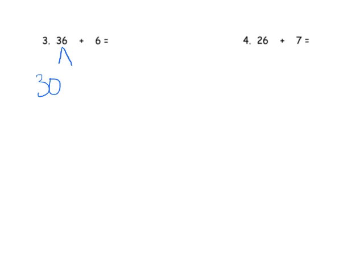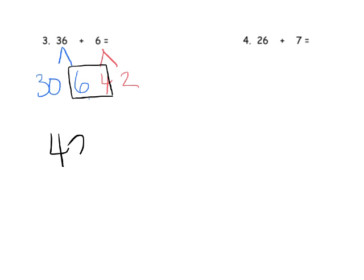One last slide with a couple of problems. Let's go — 36 can be decomposed to 30 and 6. We have a 6, and we need 4 more to make our 10, so we decompose the 6 to be 4 plus 2. That gives us our 10, giving us a total of 42 as our final answer.